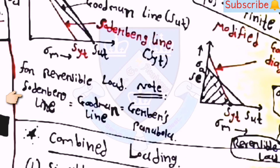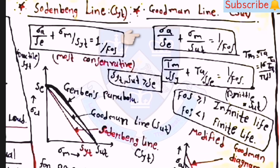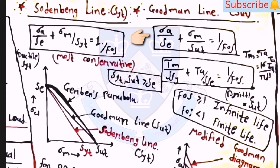For reversible load, Soderberg = Goodman = Gerber. For modified Goodman diagram: sigma_a = P/((b−d)·t). For reversible load, sigma_m = 0. For Goodman line: sigma_a/S_e + sigma_m/S_ut = 1/FOS. Also, tau_m/S_sy + tau_a/S_sc = 1/FOS. Note: FOS ≥ 1 for infinite life; FOS < 1 for finite life.